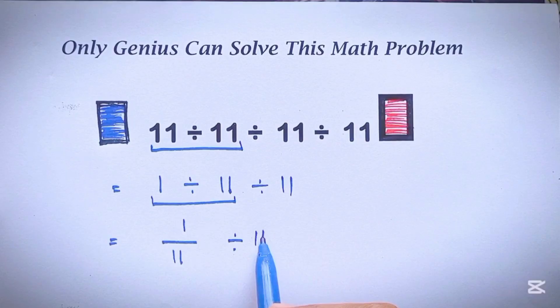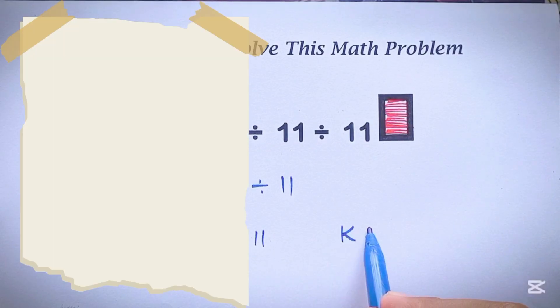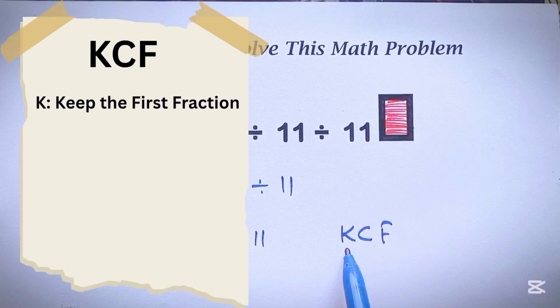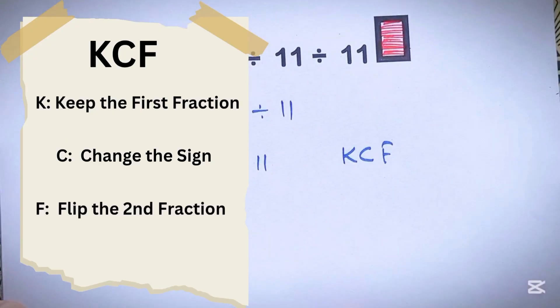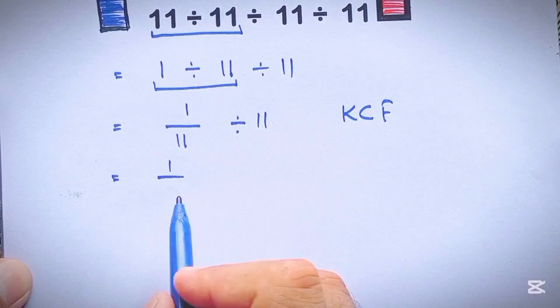And here we have divided by 11. Now according to the KCF rule, K stands for keep, C stands for change, F stands for flip. Keep the first fraction, change division to multiplication, and flip the second fraction.